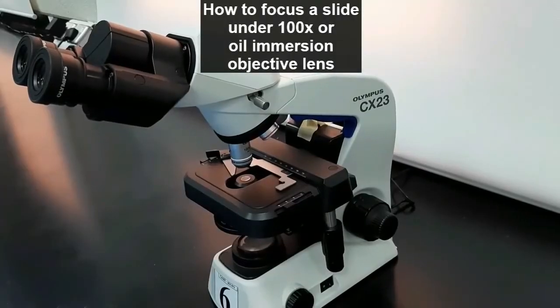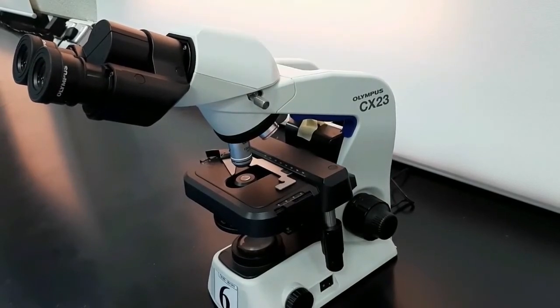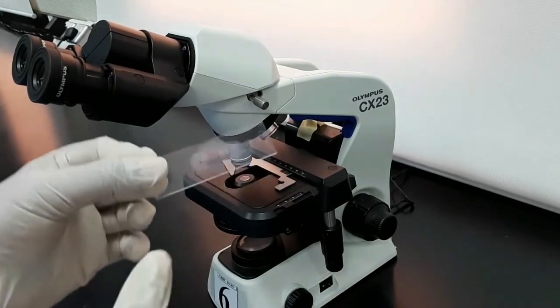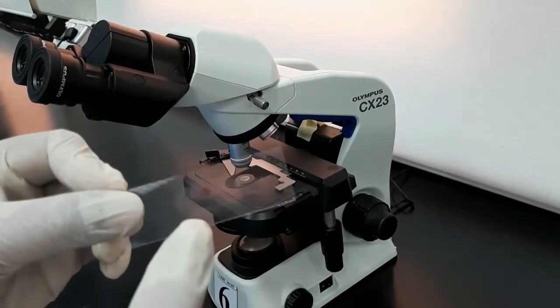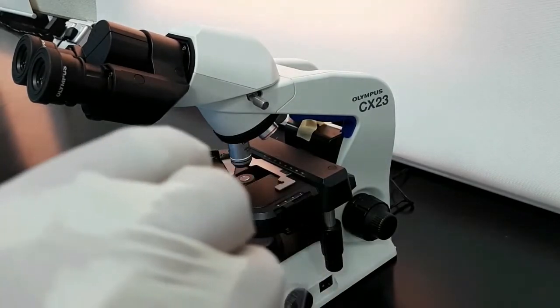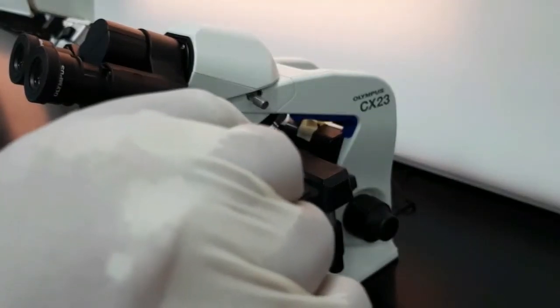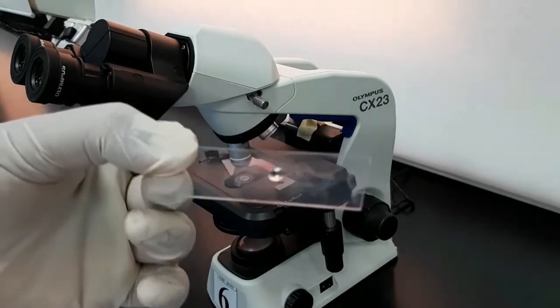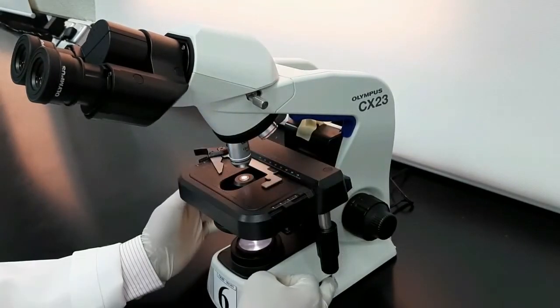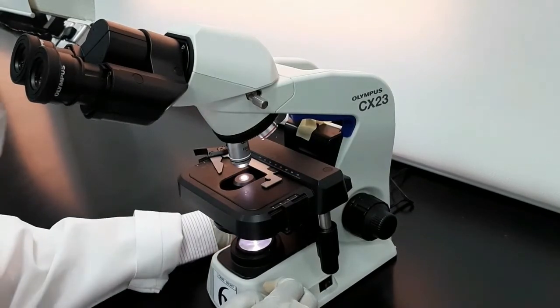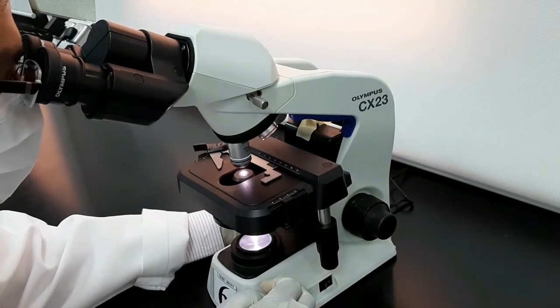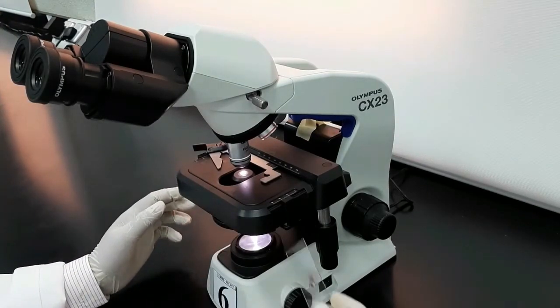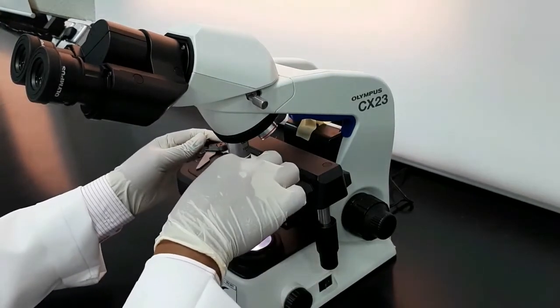Next, you can see how to focus the slide under the 100x or the oil immersion objective lens. First, make sure that the stained slide is dried and put a small drop of oil into the center of the slide where we prepared the bacterial smear. Then switch on the light and look into the microscope through the eyepiece to check if the light is coming properly. Make sure the lenses are cleaned. If there is dust or any fingerprints, clean the lenses with lens paper or special tissue.